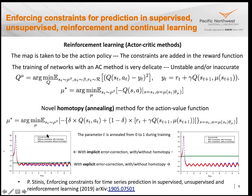Results: without enforcing constraints and without homotopy, the green line shows essentially no predictive ability. With the homotopy annealing approach, the red prediction closely matches the blue ground truth. There is a dramatic improvement in prediction quality when applying this method.